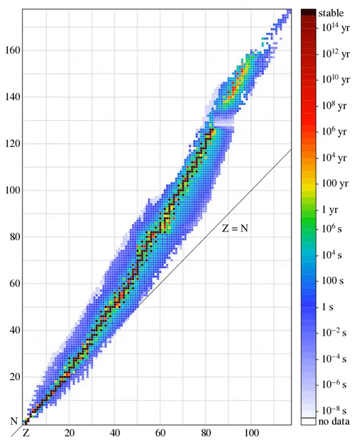Chemical properties are primarily determined by proton number, which determines which chemical element the nuclide is a member of. Neutron number has only a slight influence. Neutron number is primarily of interest for nuclear properties.